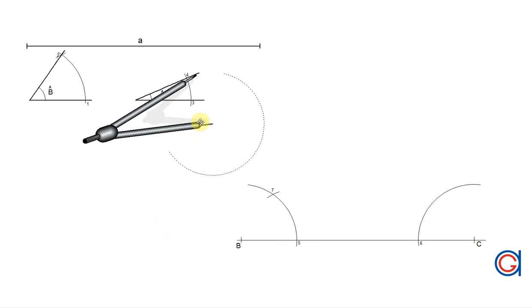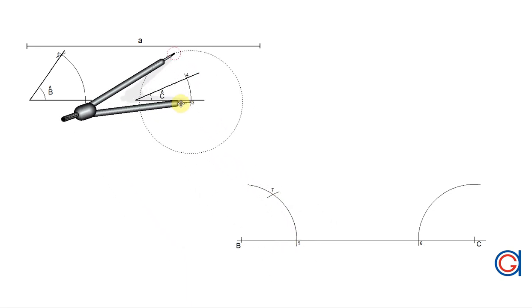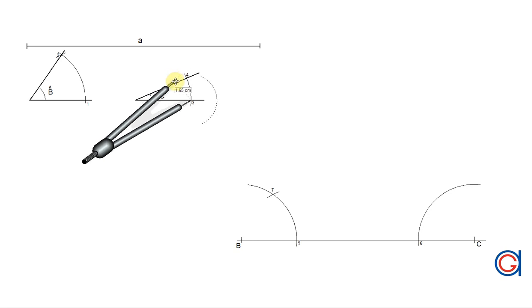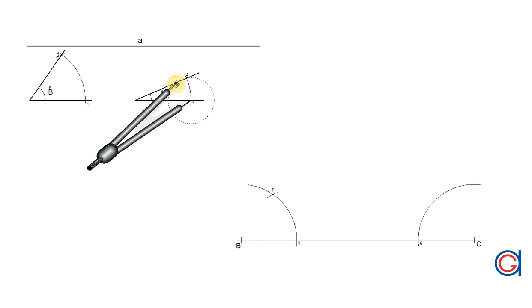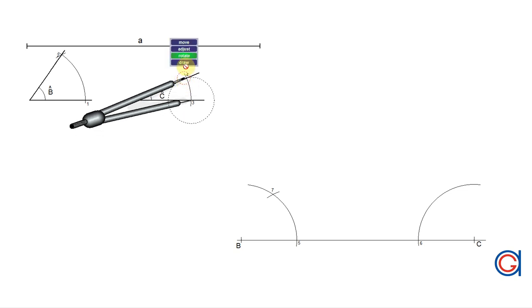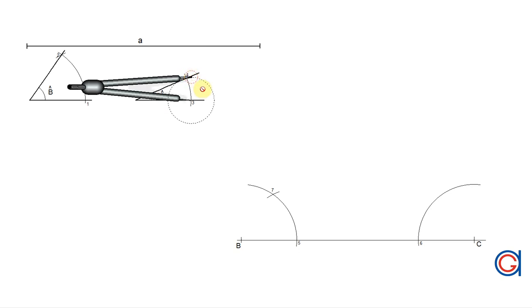And again at C to get point six. Setting our compass to the radius three-four, we transport this length to the previously drawn arc, setting our compass on point six and scribing an arc to the right until it cuts the previously drawn arc at a new point eight.